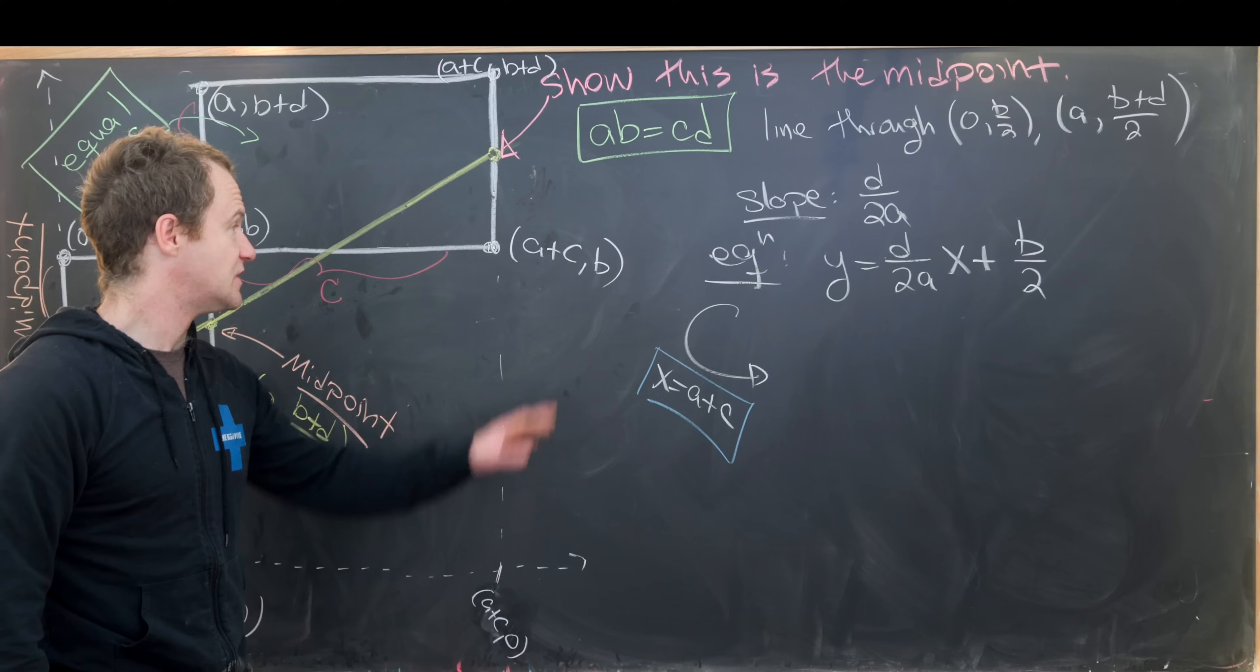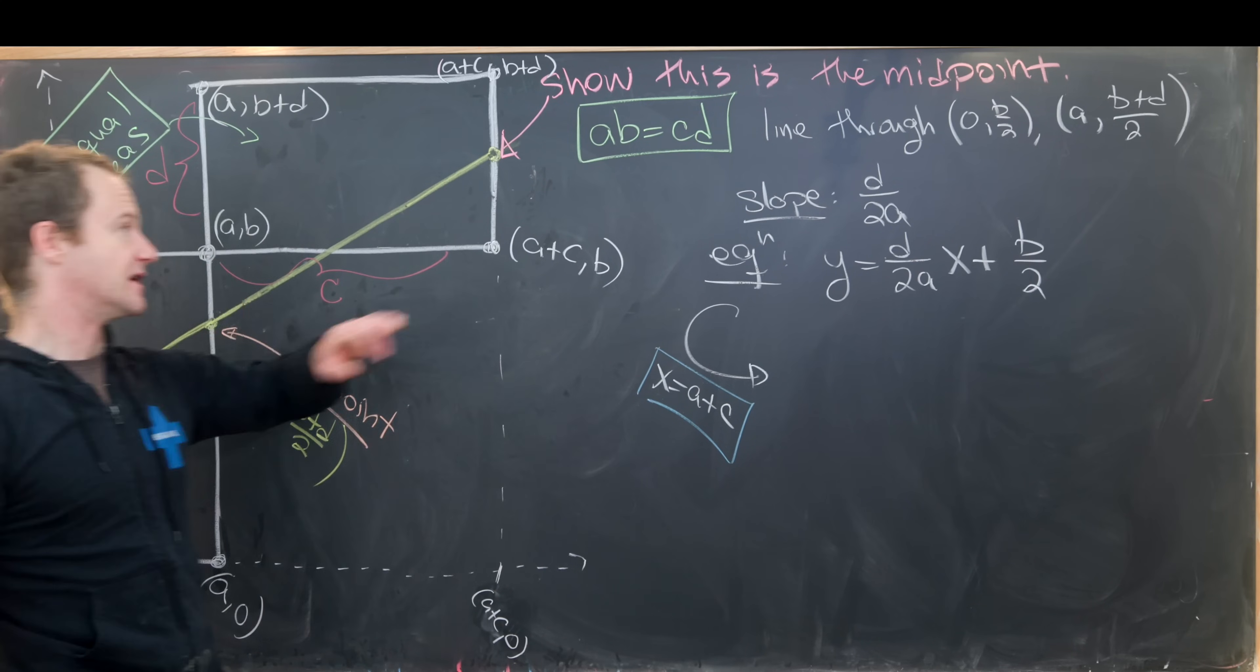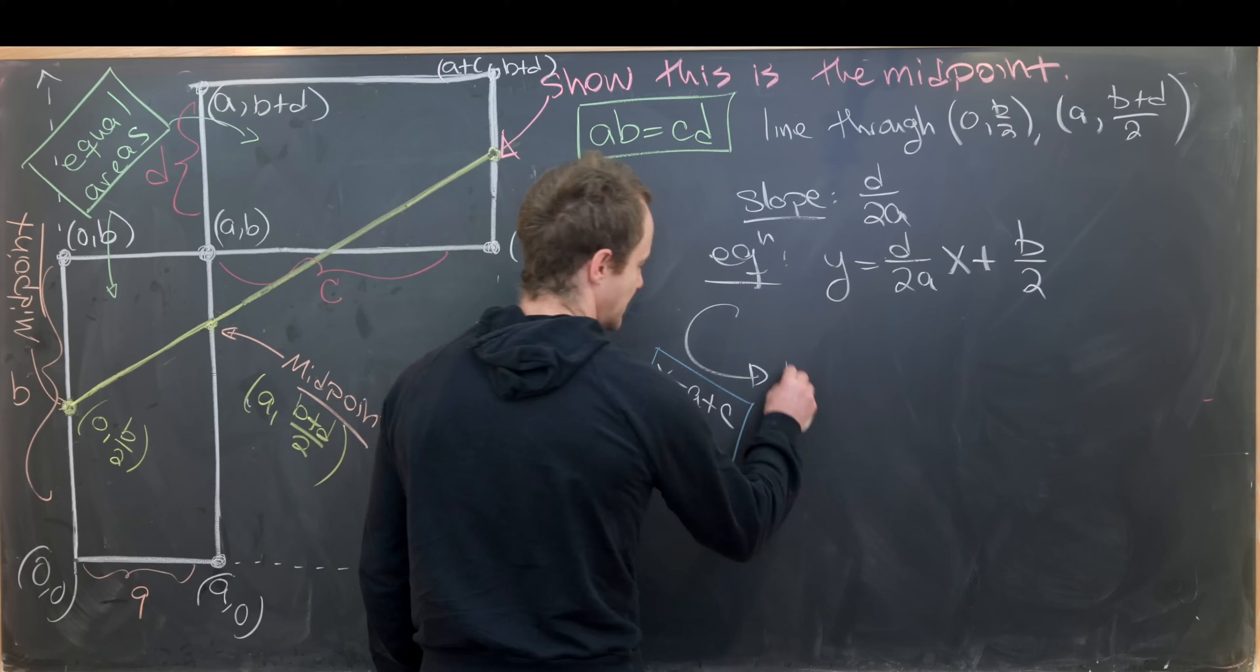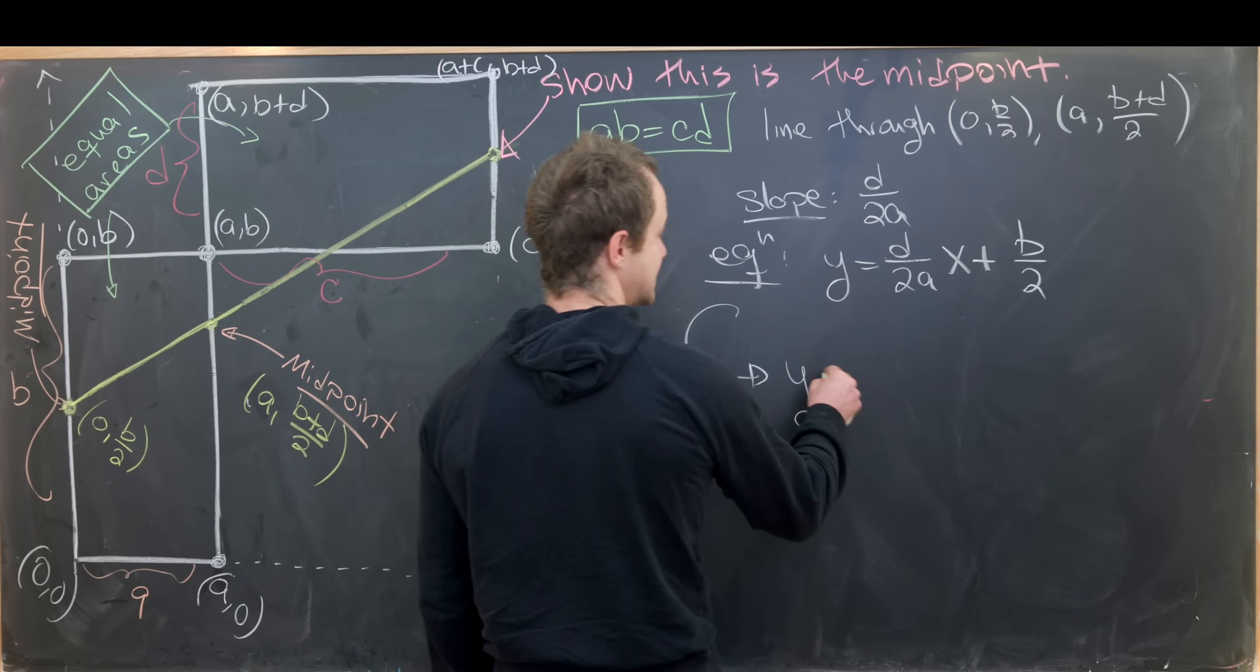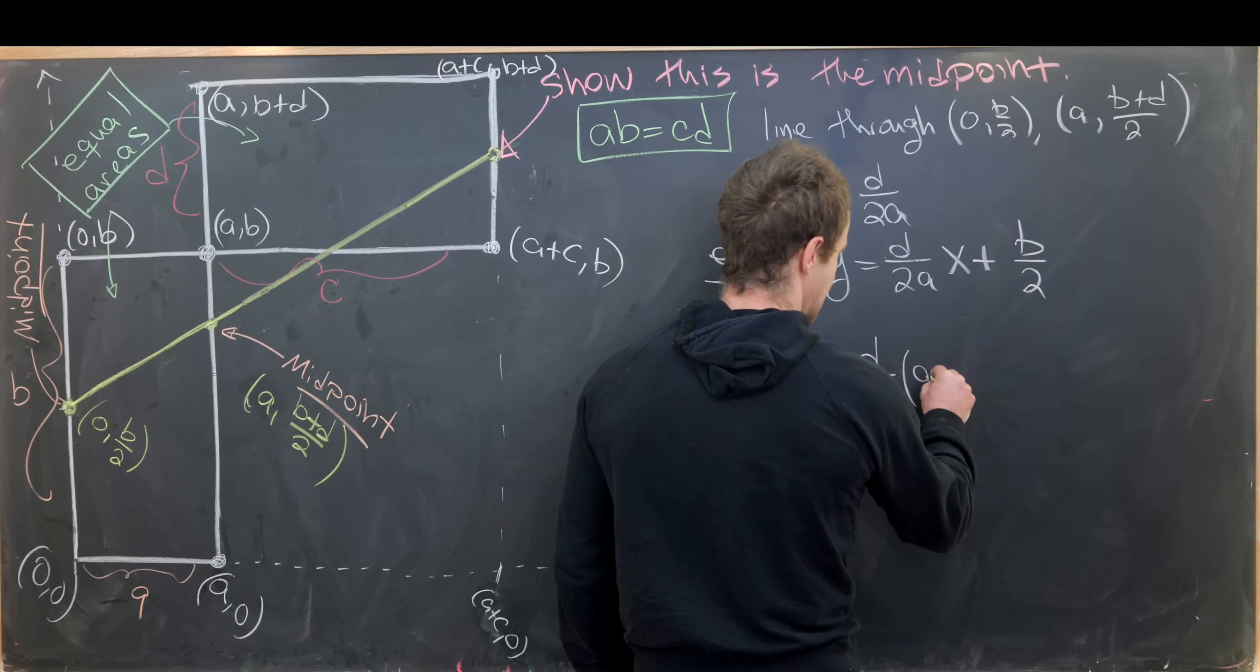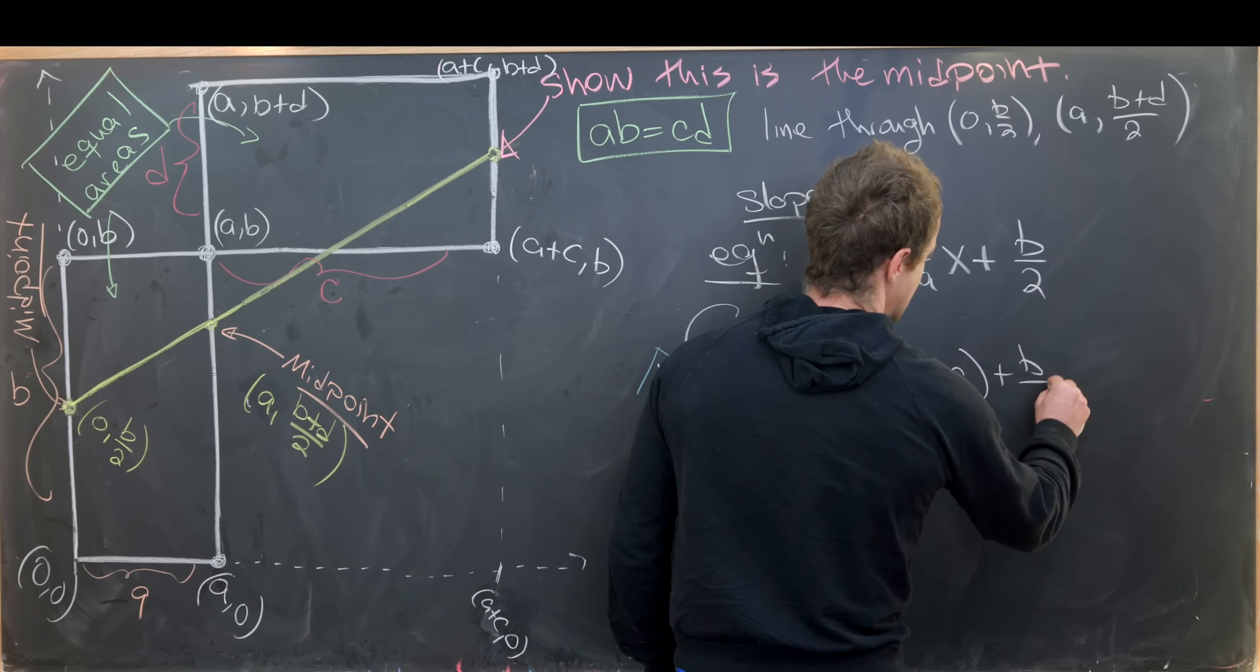Let's notice we haven't used this equality of area yet, so we're probably going to use that along the calculation. So if we evaluate at x = a+c, we'll get y = (d/2a)(a+c) + b/2.